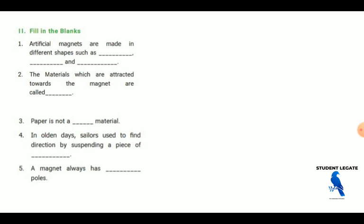The artificial magnets are made up of different shapes such as, what is the shape we can do? Bar magnet, horseshoe magnet, ring magnet.